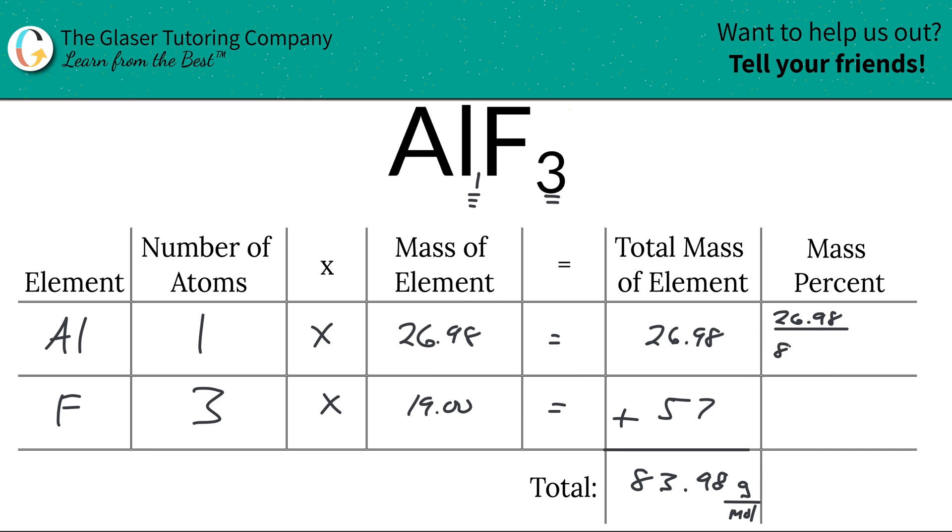So this is 83.98, and then just to make sure we have it in a percentage, we multiply it by 100. So when we do that, we get a value here of approximately 32.13%, and that's the percent by mass for aluminum.